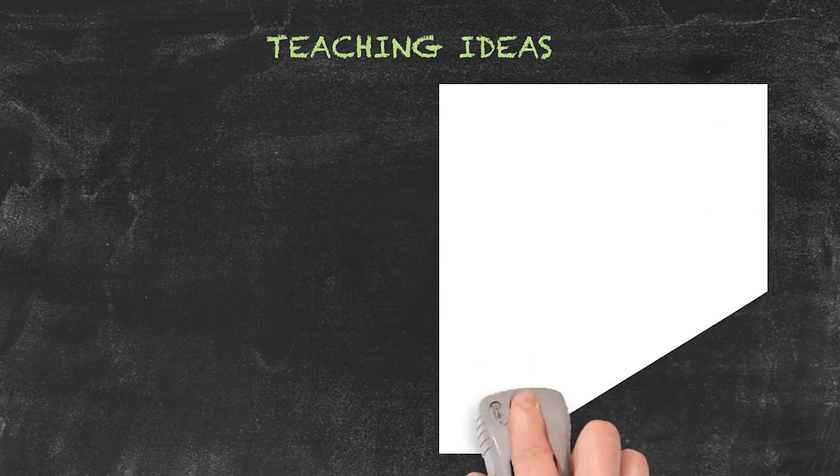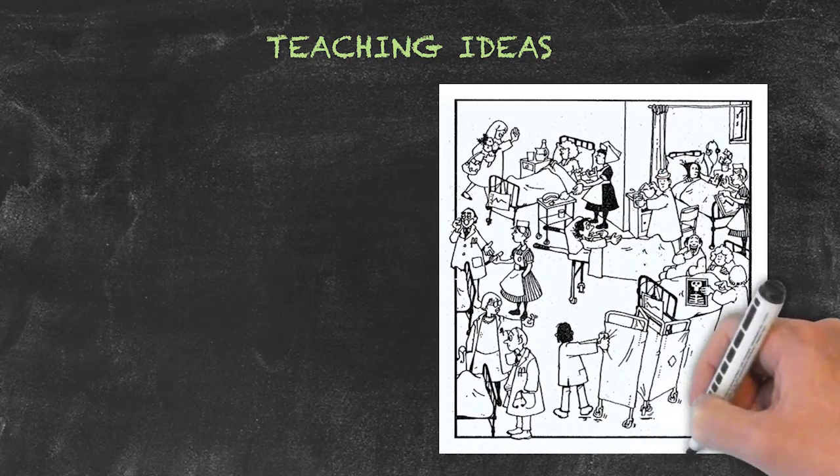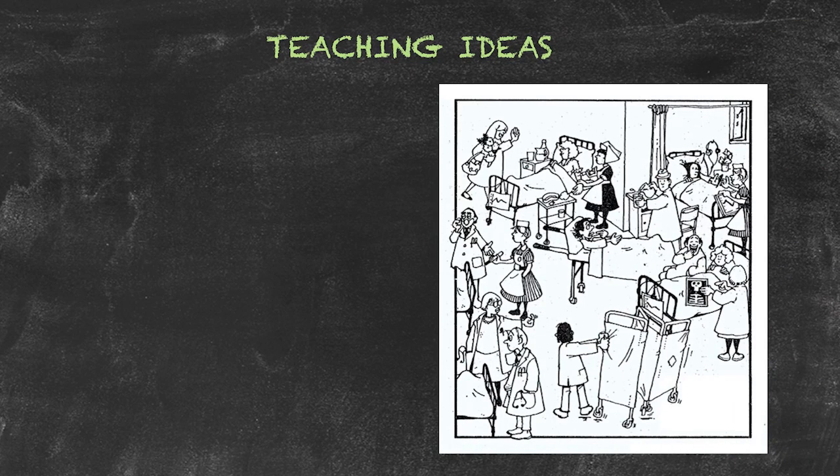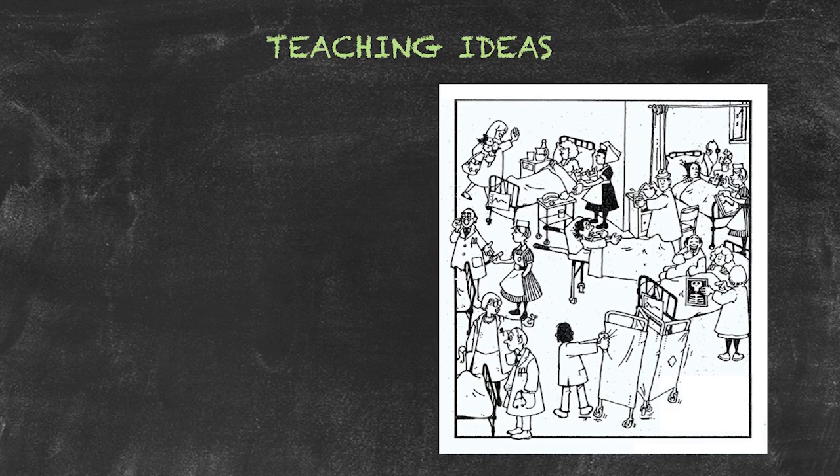Very similar to presenting a picture with activities to students and having them report what the people are doing at the present time using the present continuous tense, what we'll do here is have the students do the same thing but now we'll give them two or three minutes to look at the picture and try to remember what the people are doing before we turn the picture over and then ask the students to create sentences about what the people were doing in the picture.